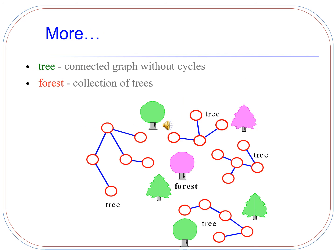What is a tree? A connected graph without any cycle is known as a tree. What is a forest? A collection of trees is known as a forest. Examples shown below are of trees and forests.